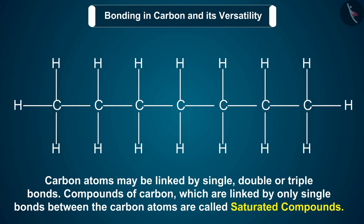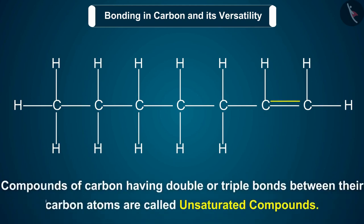Compounds of carbon which are linked by only single bonds between the carbon atoms are called saturated compounds. Compounds of carbon having double or triple bonds between their carbon atoms are called unsaturated compounds.